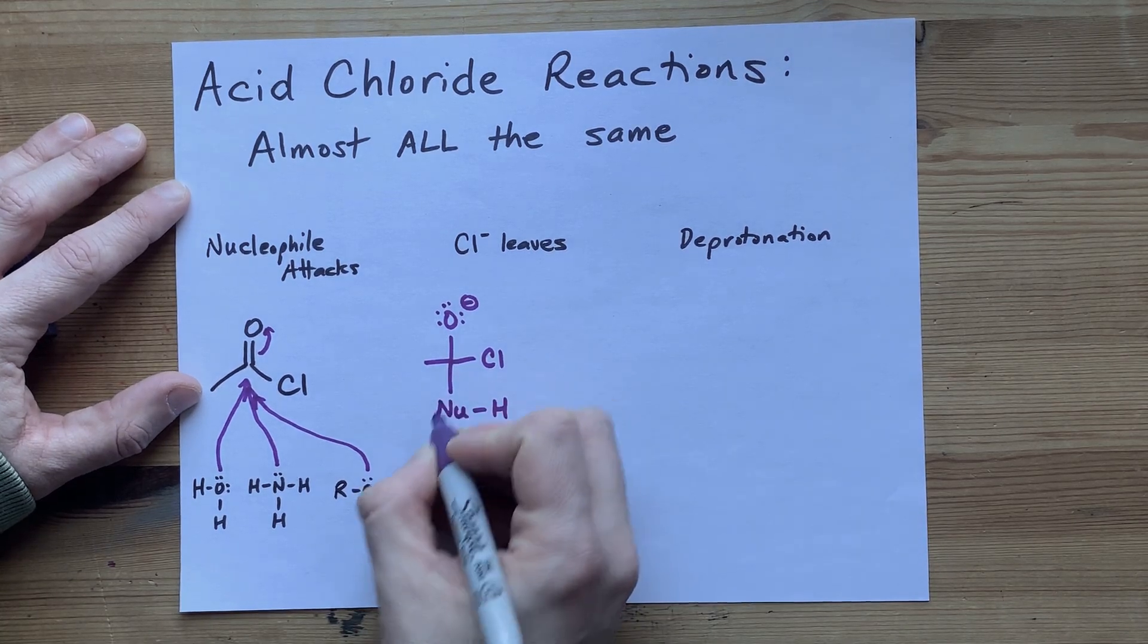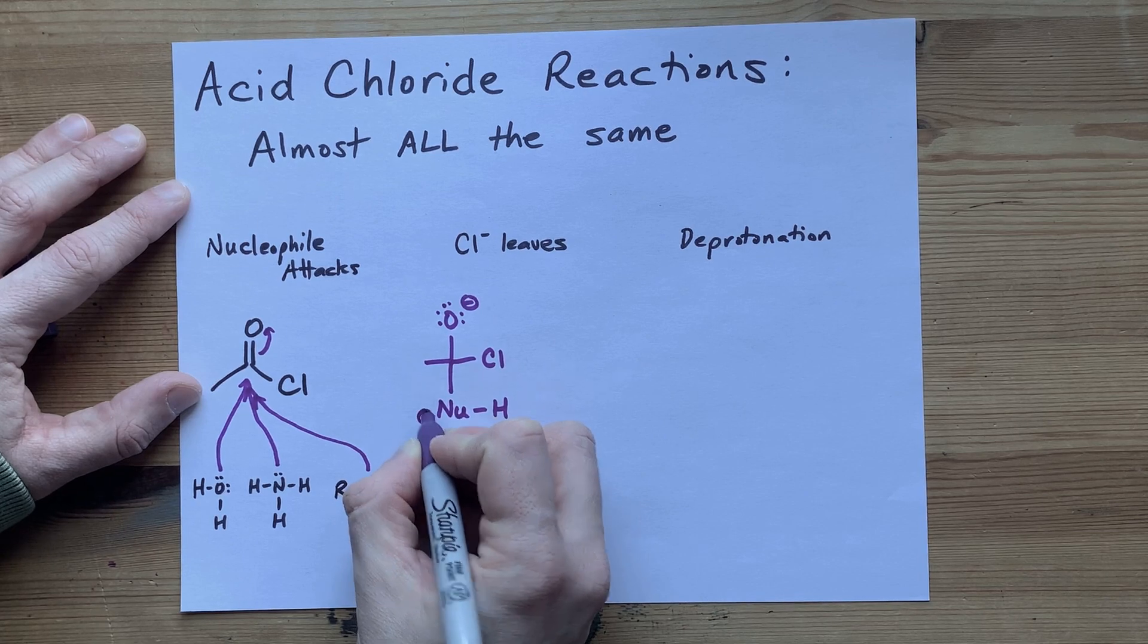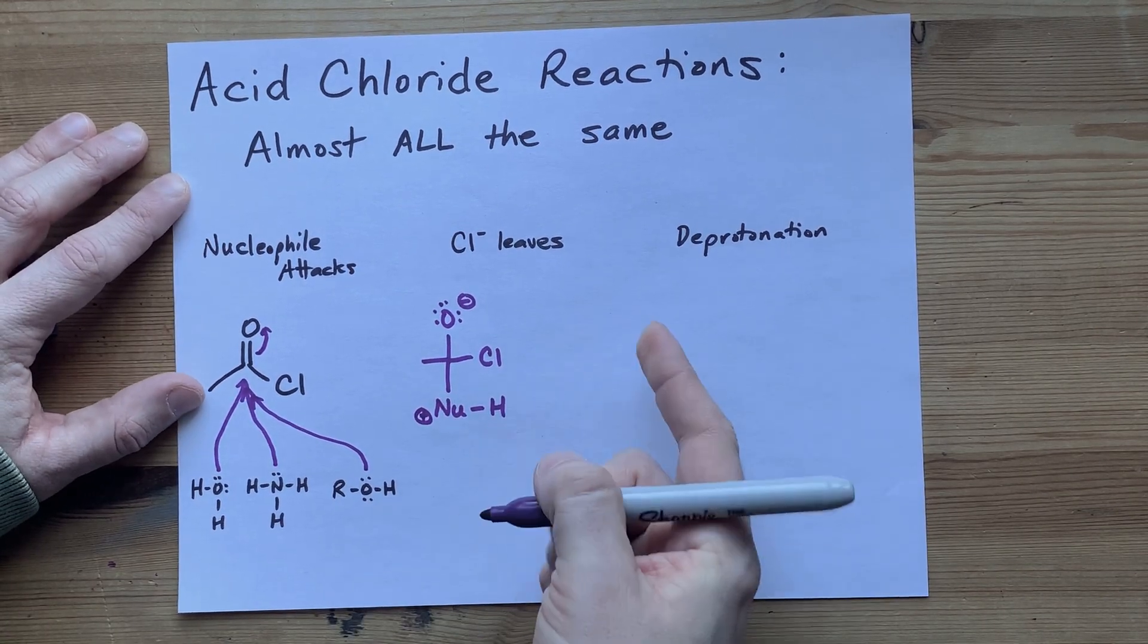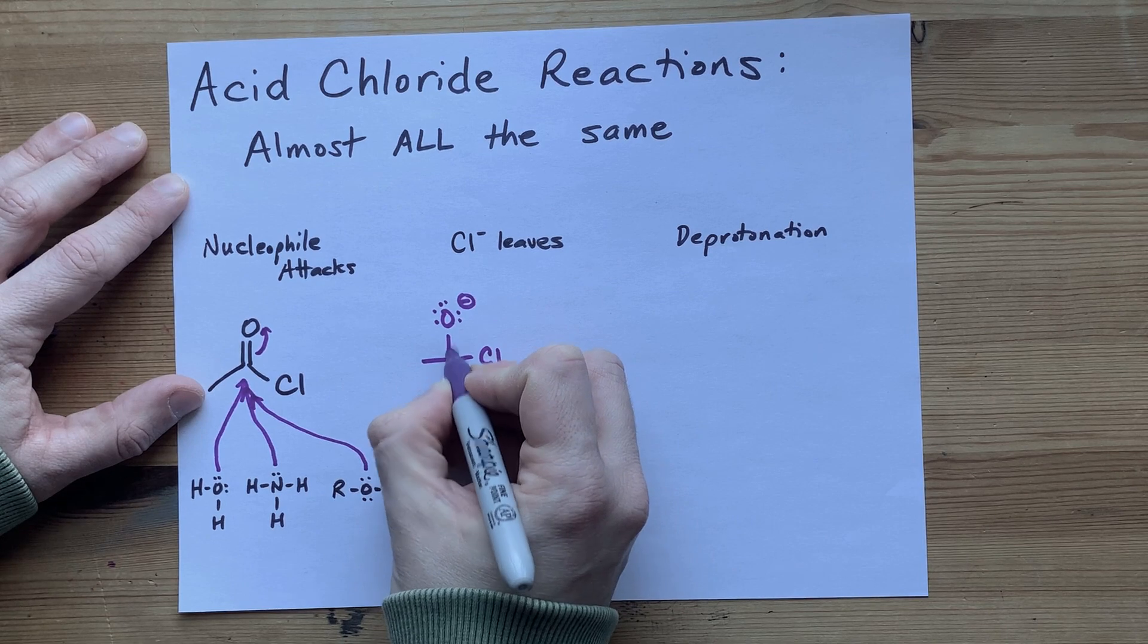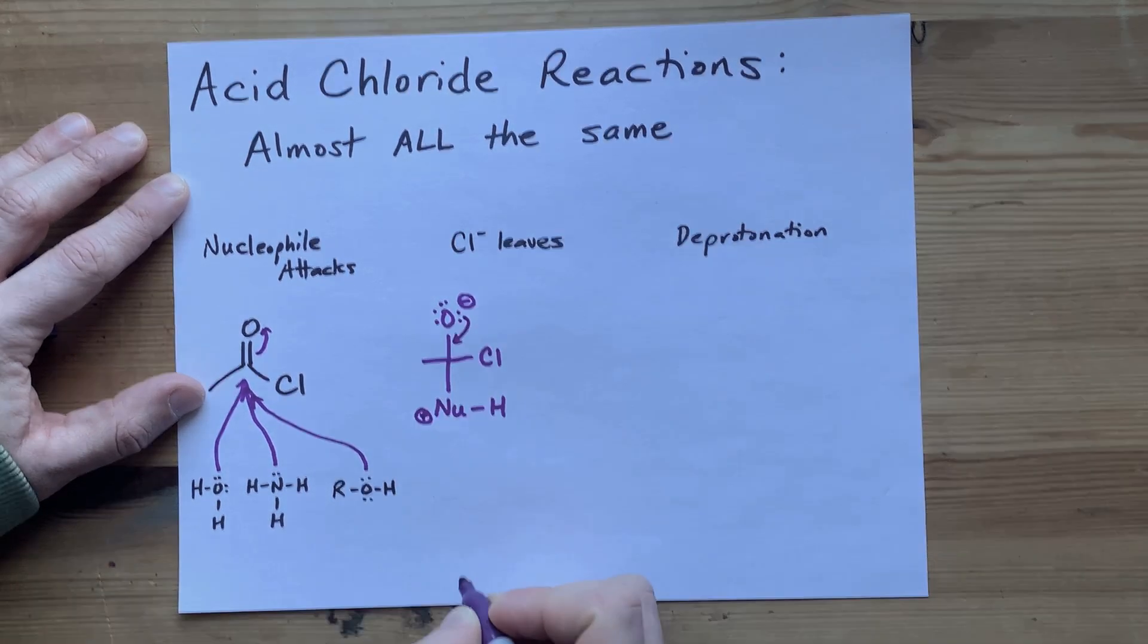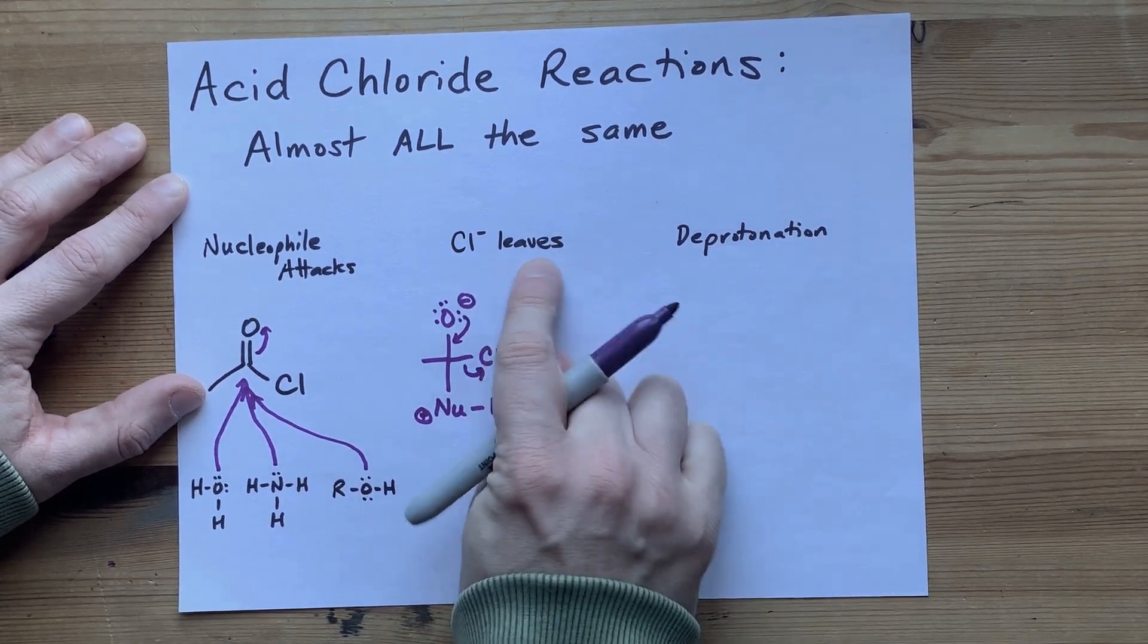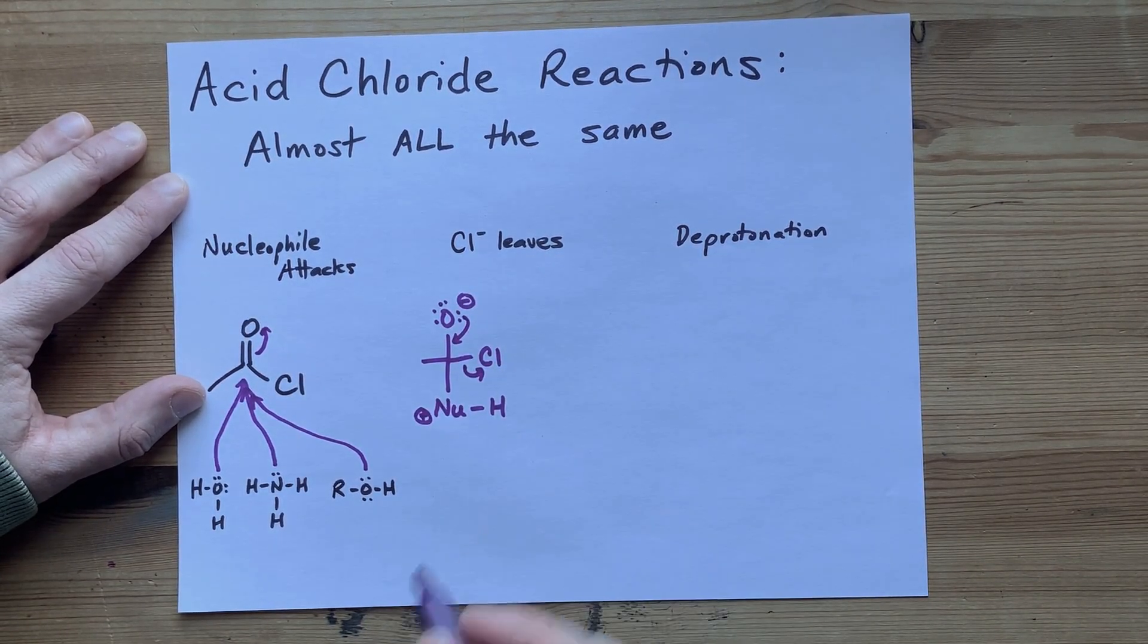So when you create a new bond between the nucleophile and that carbonyl carbon, it ends up with a formal charge of plus one. Now, to reform the double bond between this oxygen and carbon, to alleviate that negative formal charge, the chloride willingly leaves. That's why I wrote the next step here is basically the chloride leaving.